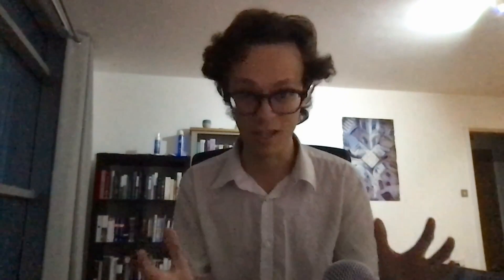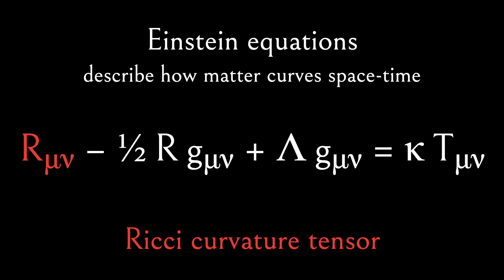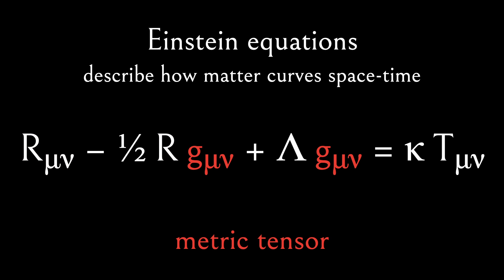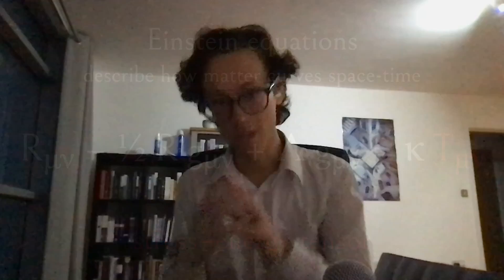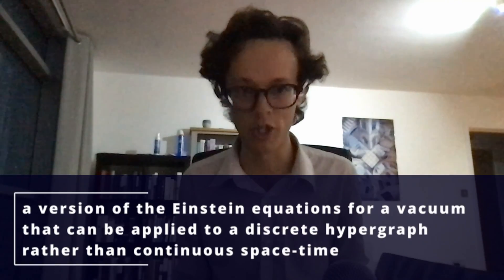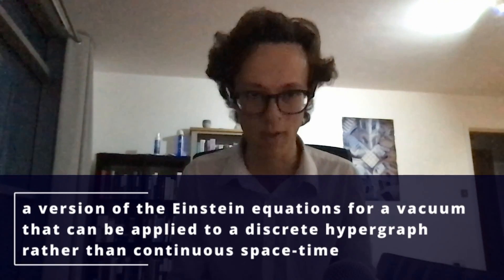Crucially, the Ricci curvature tensor and the Ricci scalar curvature are the two quantities that appear in the Einstein equations. The Einstein equations are telling you that some combination of the scalar curvature, the curvature tensor, and the metric tensor is equal to effectively the matter-energy distribution of spacetime — the stress-energy tensor. So again, we can do exactly the same construction and get these projections of the discrete Ricci curvature tensor. From that, we should have all the pieces necessary to formulate a discrete version of at least the vacuum Einstein field equations.